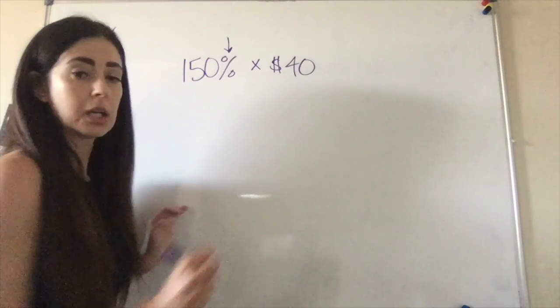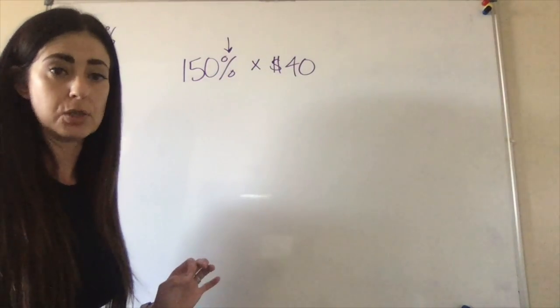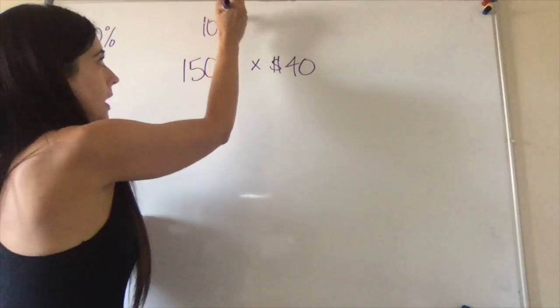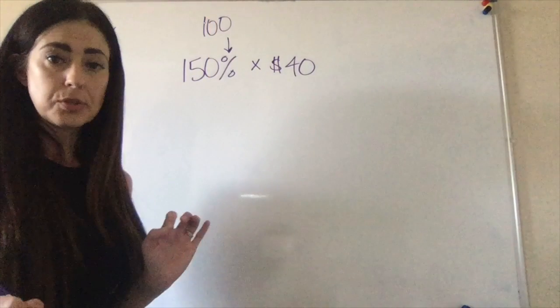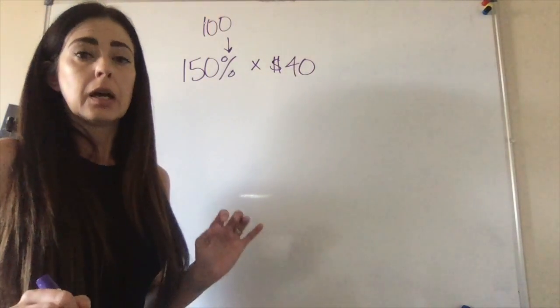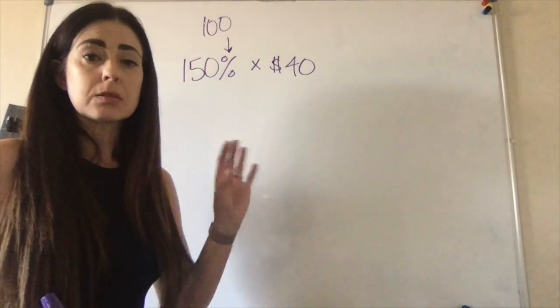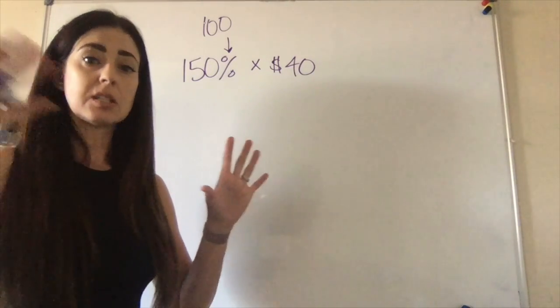Now we know that percent means out of a hundred, so to turn this into a decimal we're going to divide it by a hundred. And a hundred, we know that when we divide by powers of ten, which means a one and zeros...